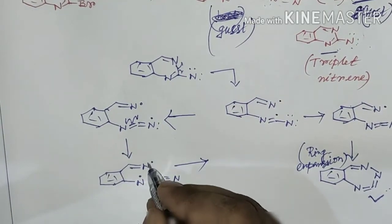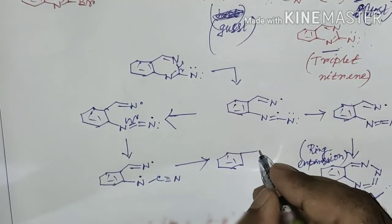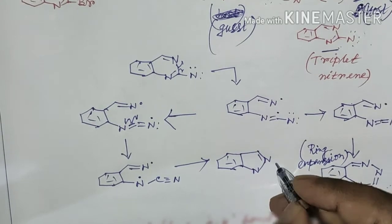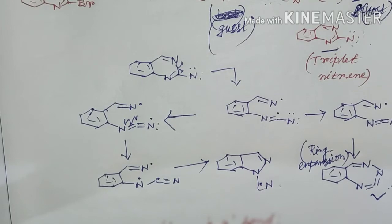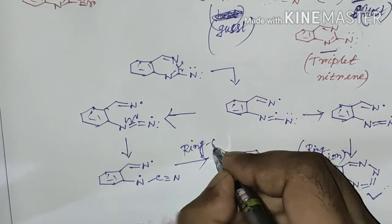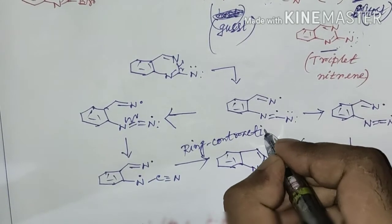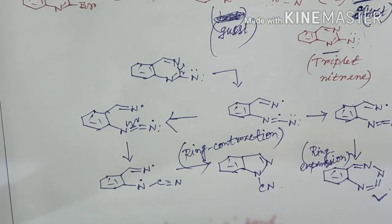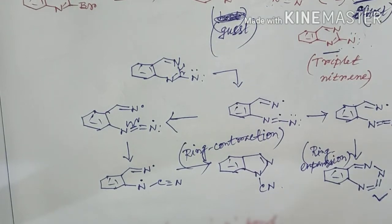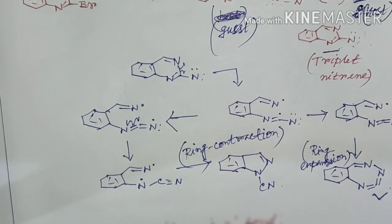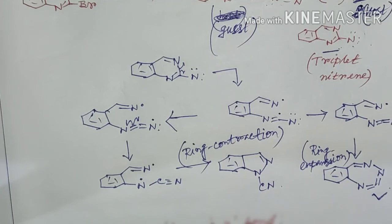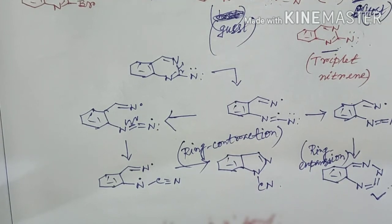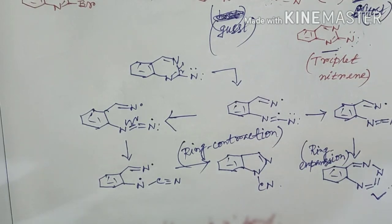The two radical centers can then couple to form the ring-contracted product. These are the probable mechanisms by which the ring expansion and ring contraction products are formed from aryl nitrene. In the next video, I will discuss a few rearrangement reactions helpful for MSc entrance examinations, CSIR NET, and especially IIT JAM. Thank you for watching — if you found this video helpful, please like and share it, and subscribe to the channel for notifications of future discussions.